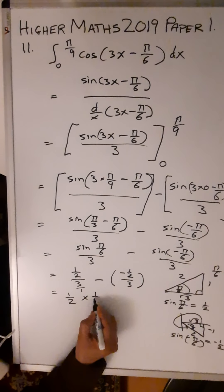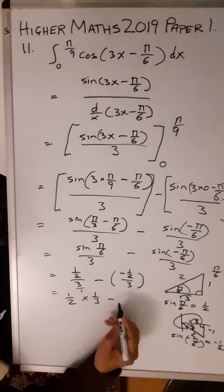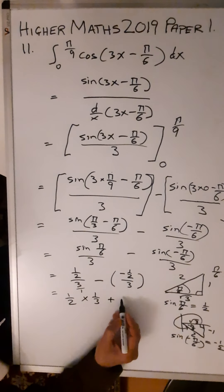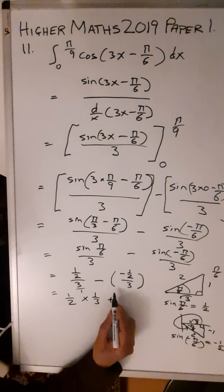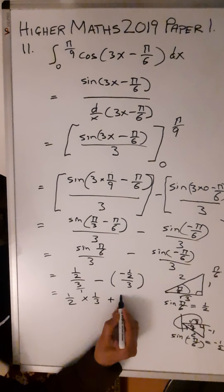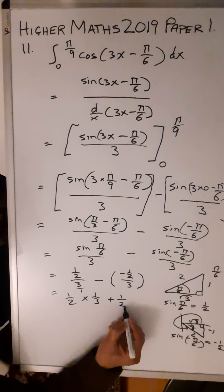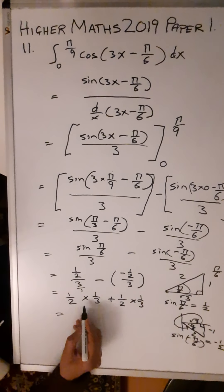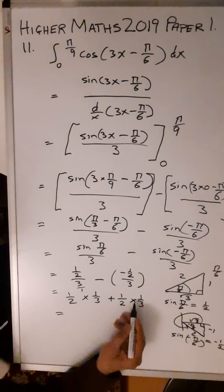Minus minus gives you a plus, so again you got 1/2 plus 1/2 over 1/3. That's just going to give you 1/2 × 1/3, so what you're ending up with is 1/6 + 1/6.